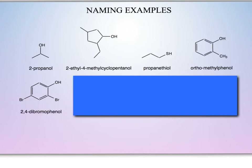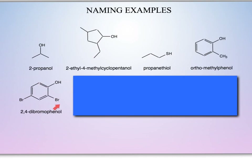Here we have a thiol with a chain that is three carbons long — 1, 2, 3 — so we have a propanethiol. Here we have a phenol, which we identify by the OH attached to the aromatic compound, and we have a methyl group coming off. We could call this 2-methylphenol, or using the ortho/meta/para prefixes, since it's in the 1,2 position, that's ortho — so we would have an ortho-methylphenol. In this final example, we also have a phenol group with bromines coming off of carbons 2 and 4, giving us 2,4-dibromophenol.